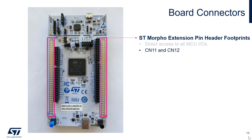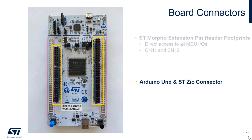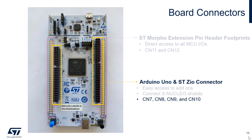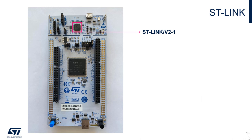Moving inward, there are also another set of connectors. They allow for easy access to add-ons compatible with the Arduino Uno, mounting of our X-Nucleo shields, and are denoted as CN7, CN8, CN9, and CN10.